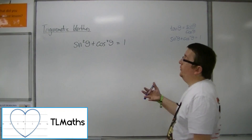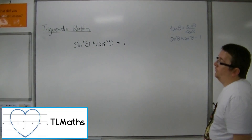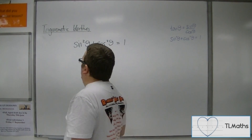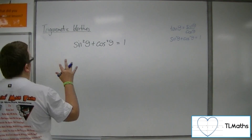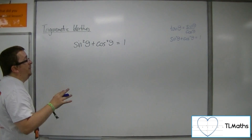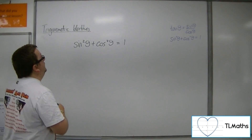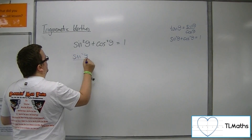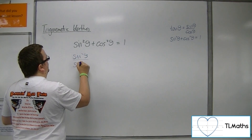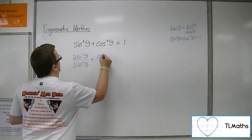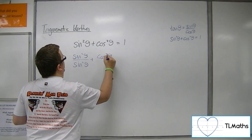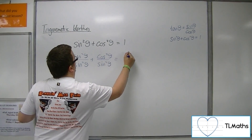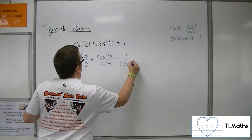We know that sine squared plus cos squared equals 1. Now if I divide both sides — all elements — by sine squared, I get sine squared over sine squared plus cos squared over sine squared is equal to 1 over sine squared.